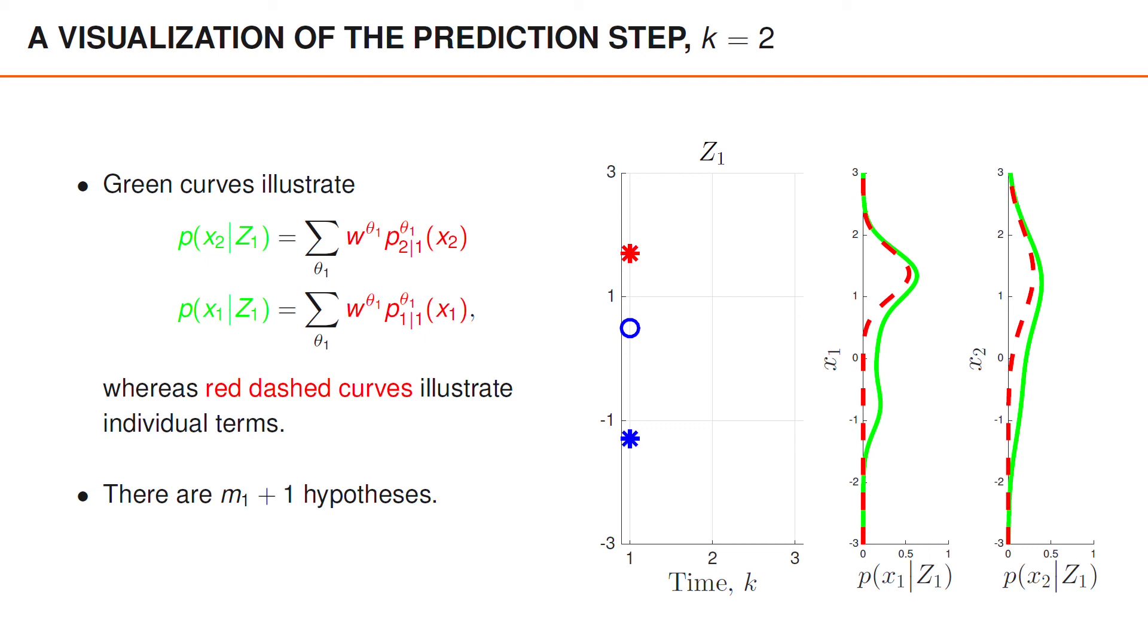Consequently, the overall predicted density is flatter and the two peaks that we see in the posterior at time 1 are no longer visible.